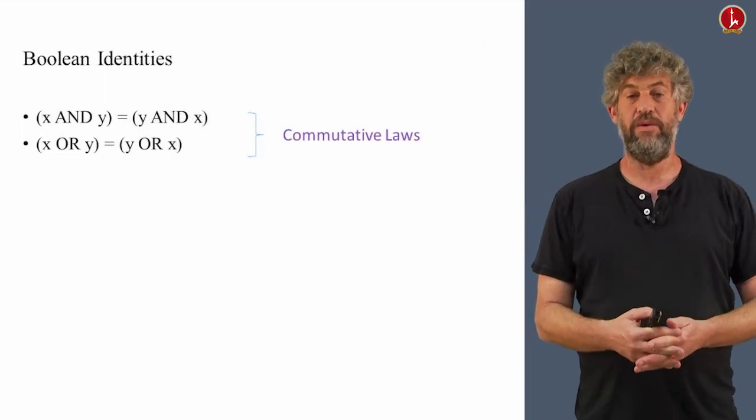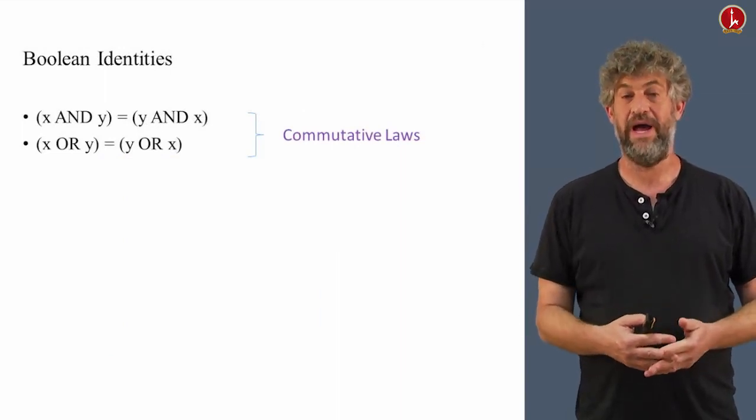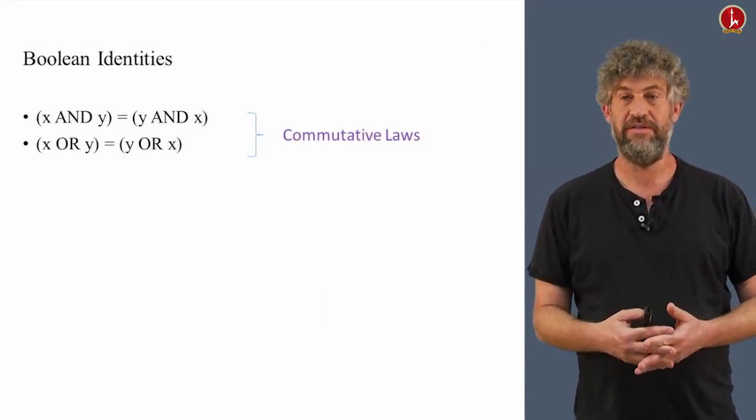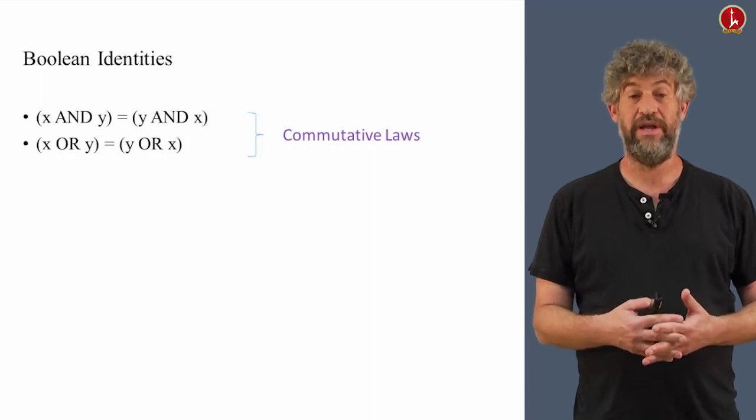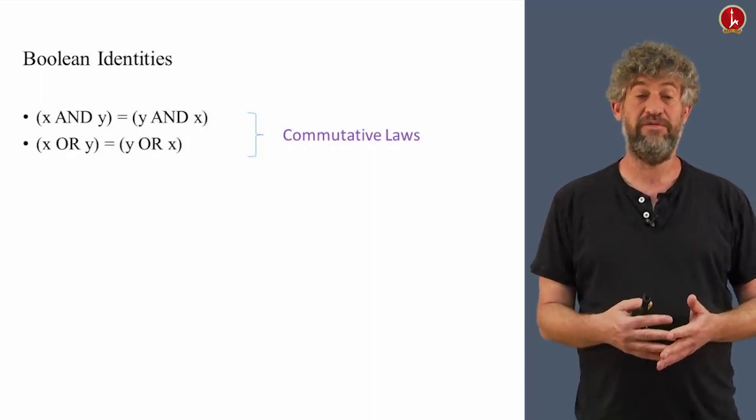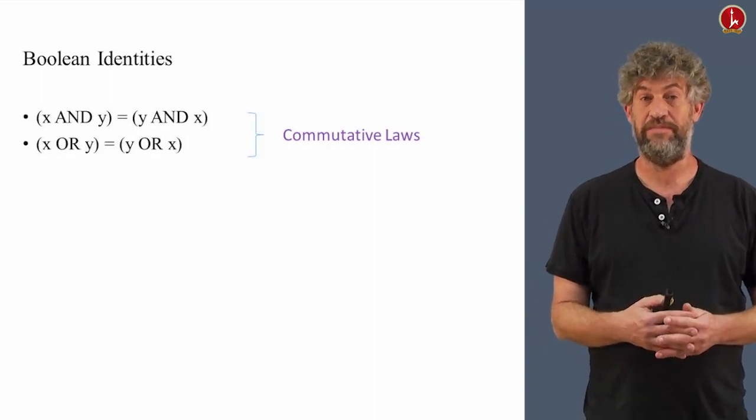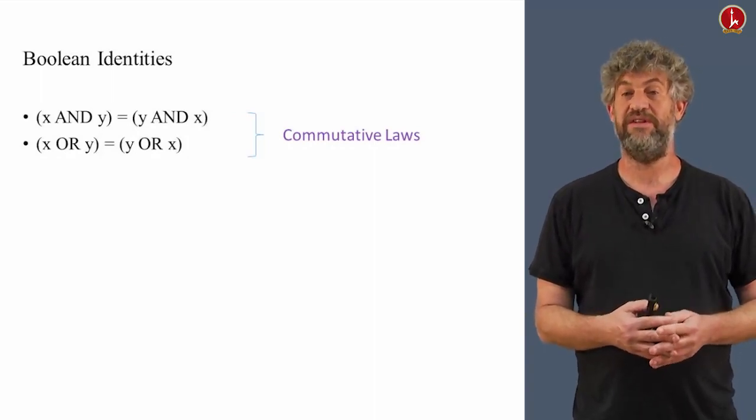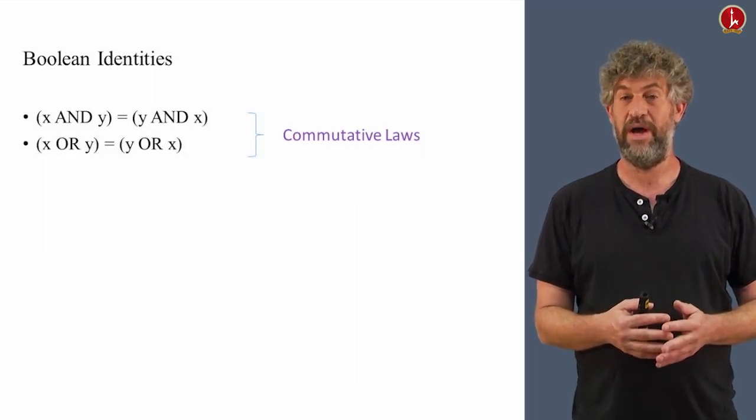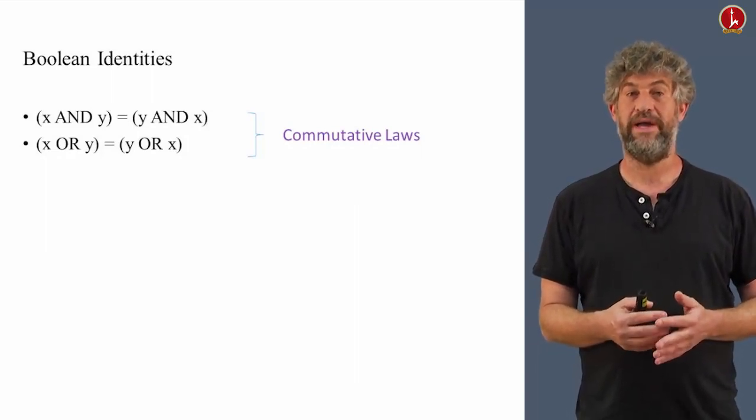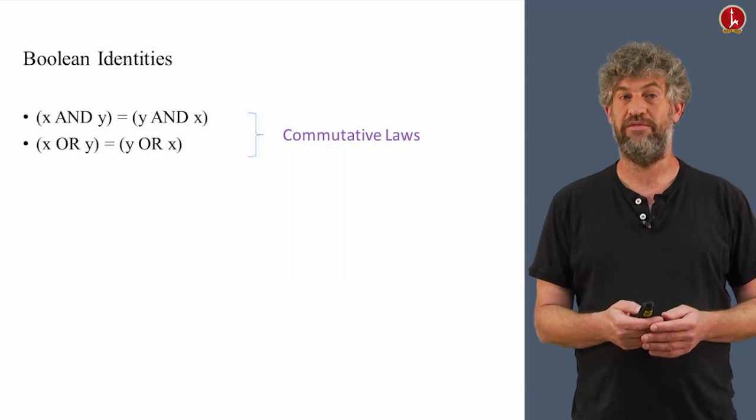So now, once we know we can describe Boolean functions using formulas, and basically we have general Boolean expressions, we can actually try to find what are a bunch of Boolean identities that always give us equality. For example, we can always see that x AND y, whatever the values of x and y are, is exactly equal to y AND x. This is called the commutative law.